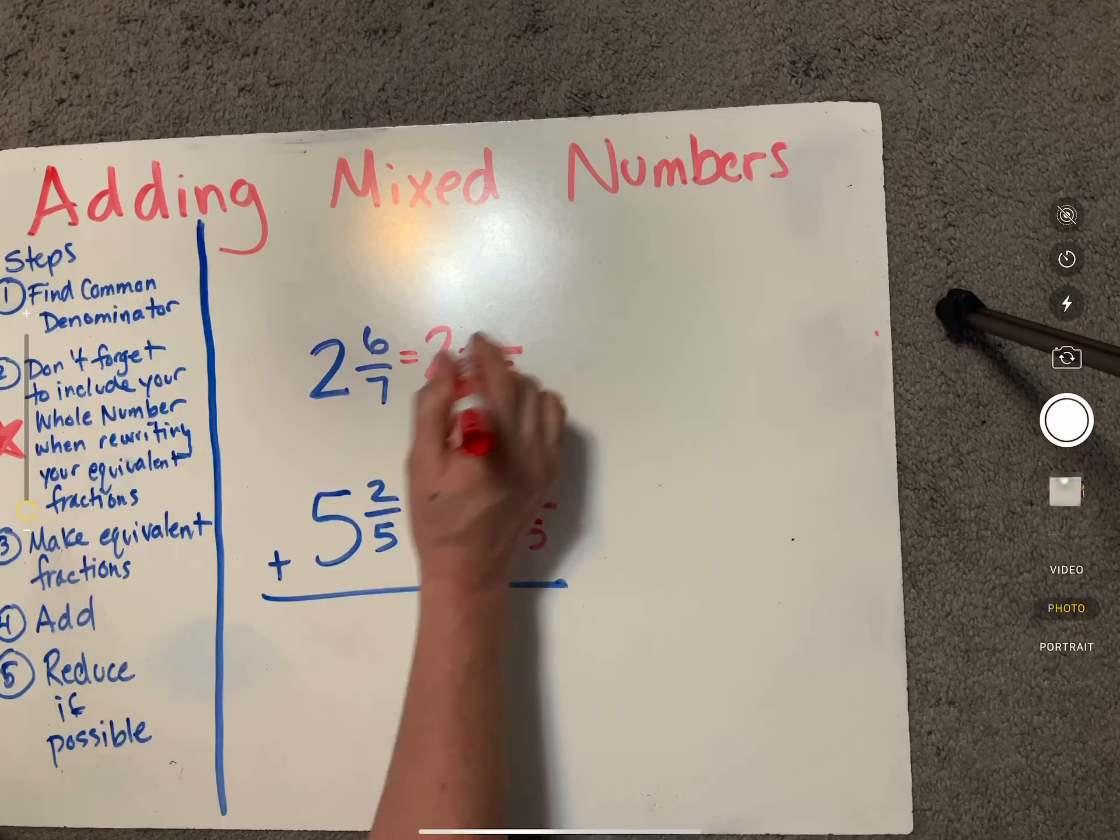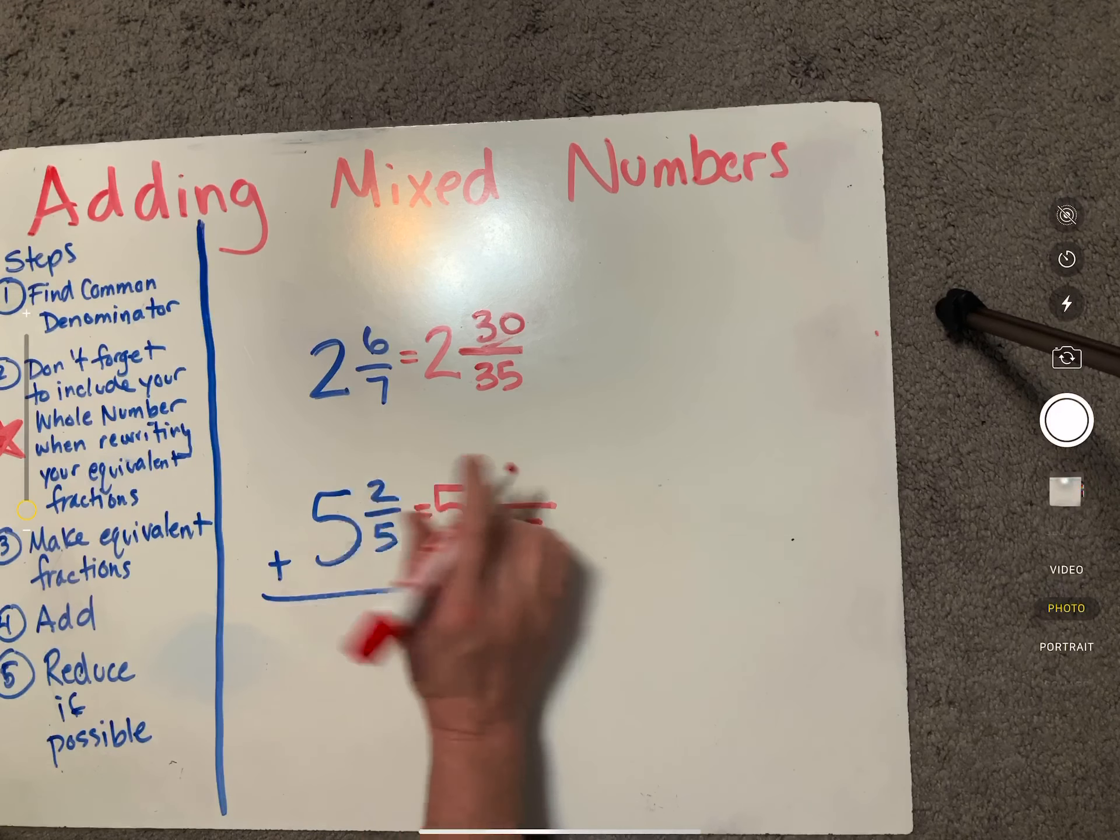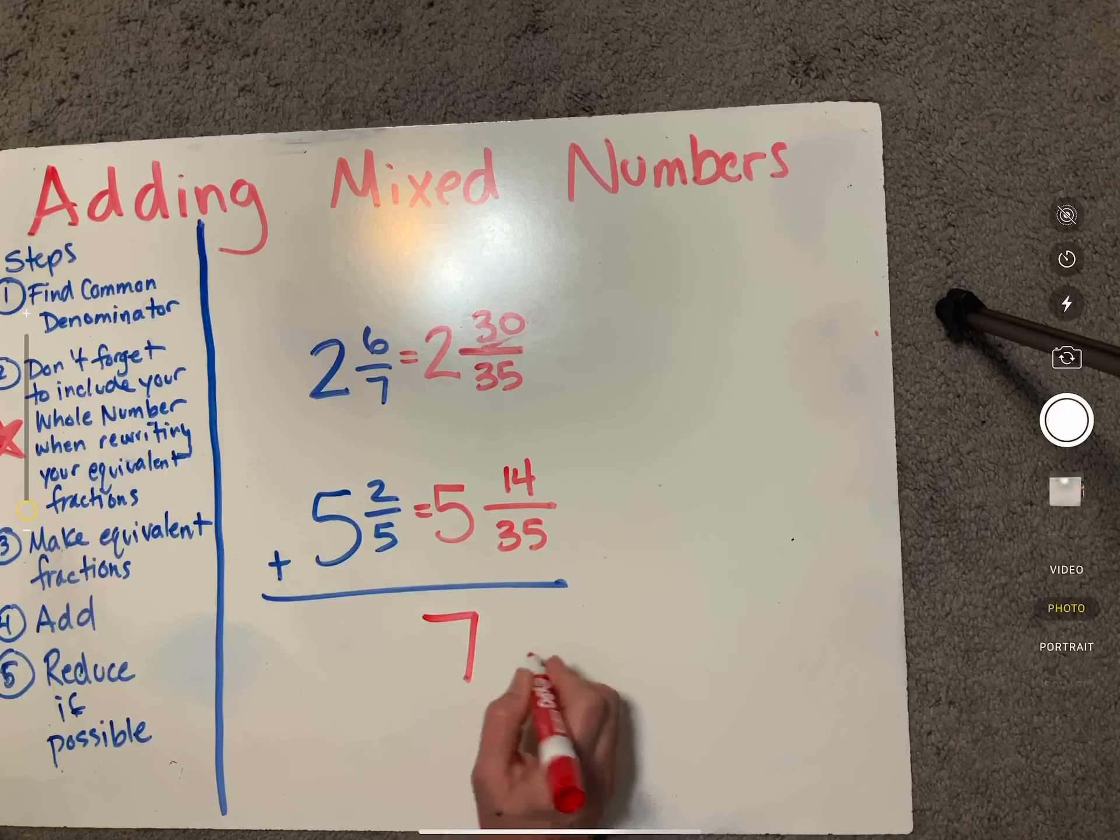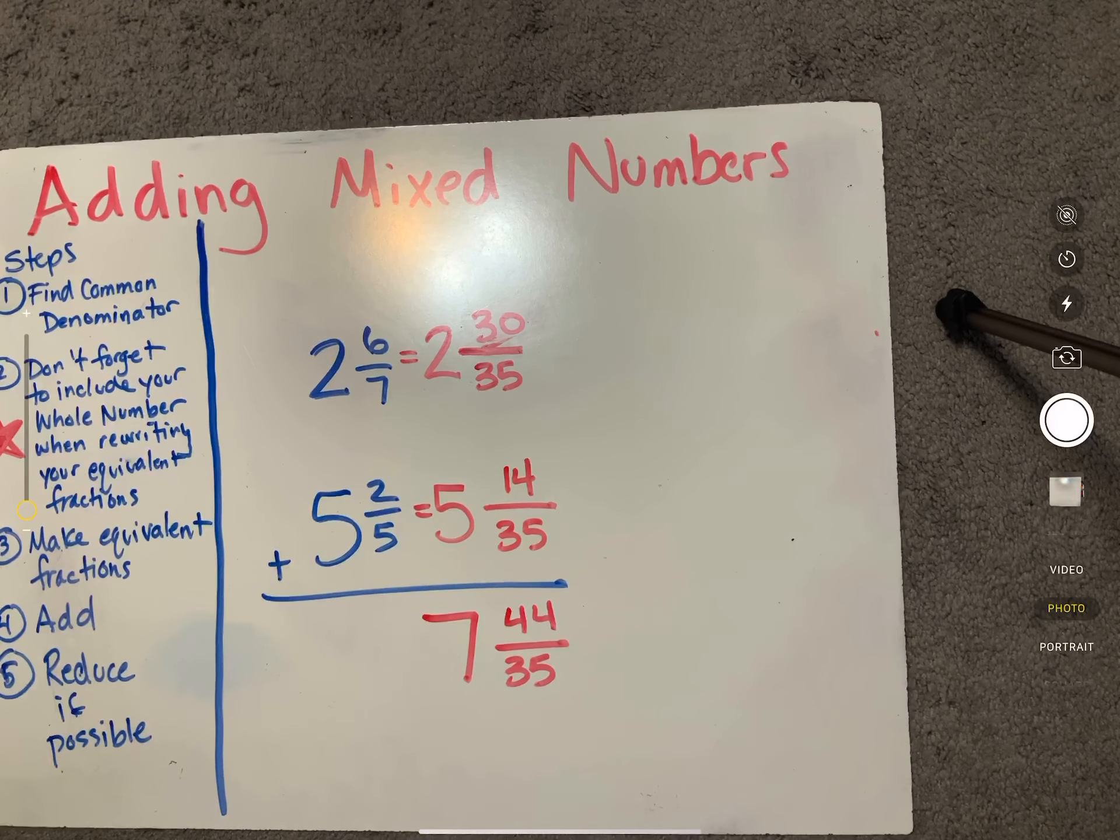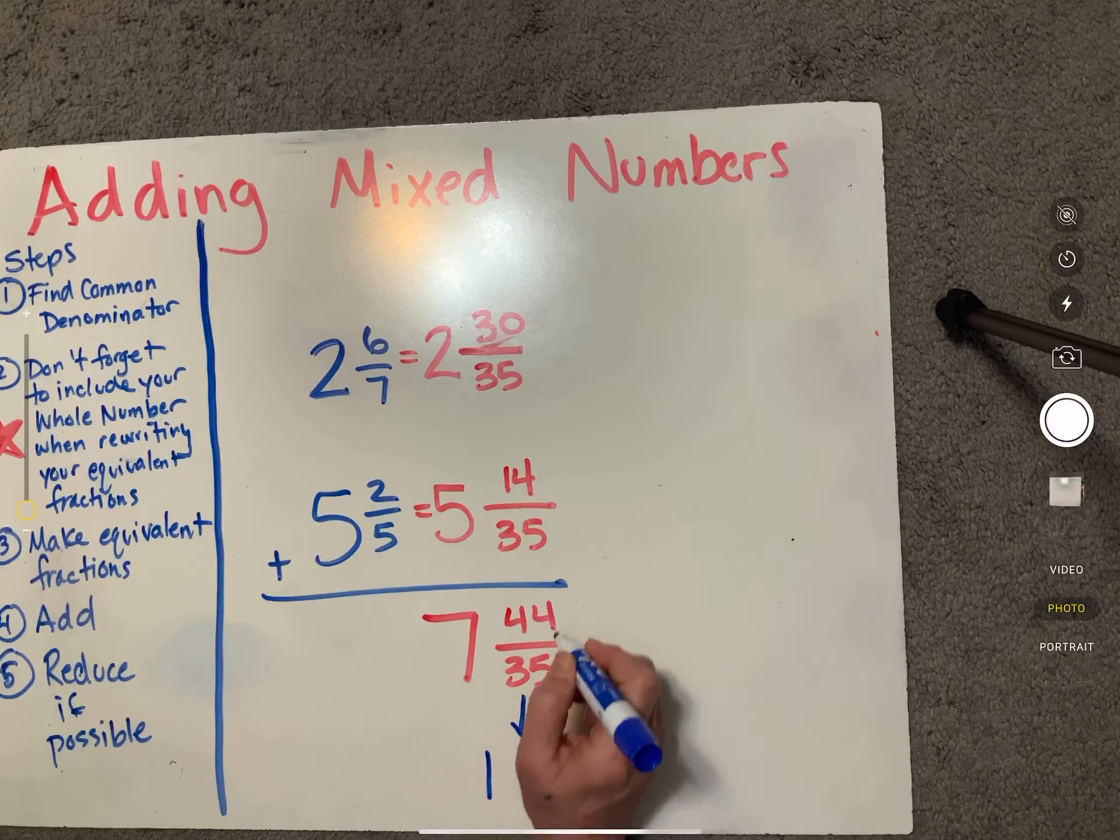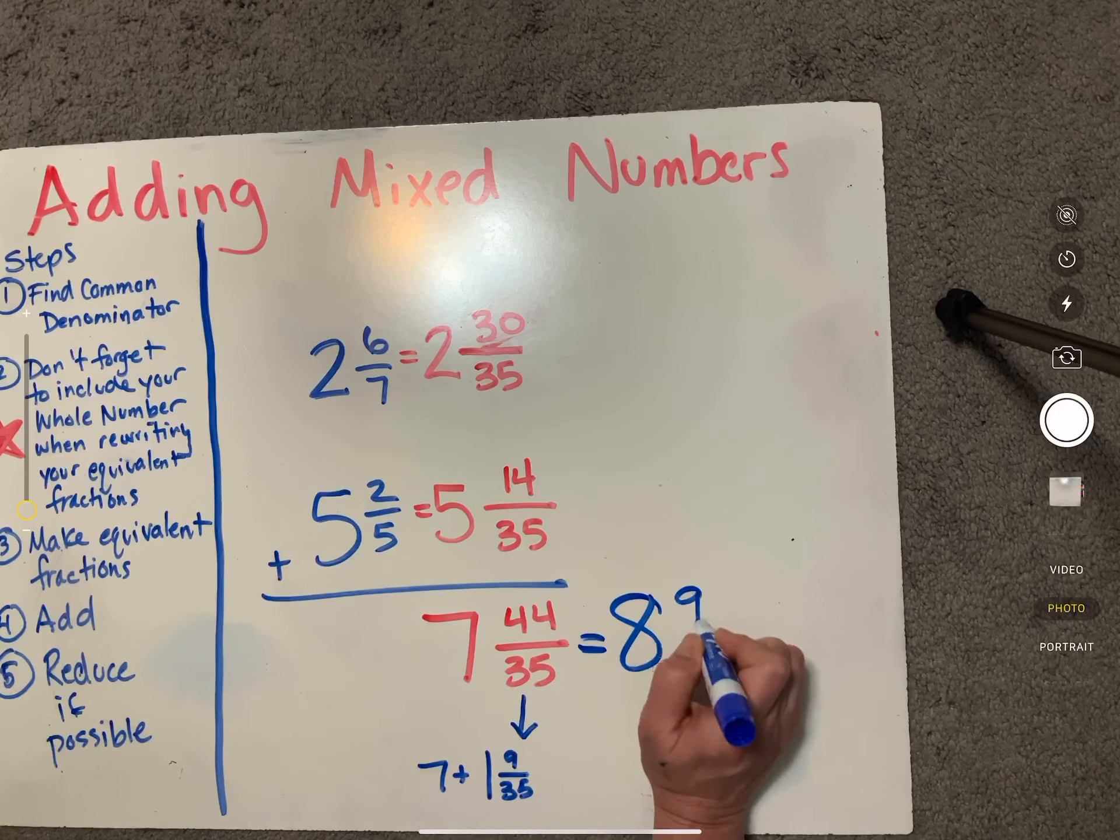Seven and five, my common denominator here is going to be 35. Seven times five is 35. Six times five is 30. Five times seven is 35, two times seven is 14. Now we're ready to add. Two plus five is seven. Our denominator will remain the same. 30 plus 14 will be 44. So once again, we've got this weird improper fraction business going on. If I were to change this to a mixed number, I would have this goes in one time with how many remaining? Nine thirty-fifths, right? And we'll just add the seven to that. So that means our answer is going to be eight and nine thirty-fifths.